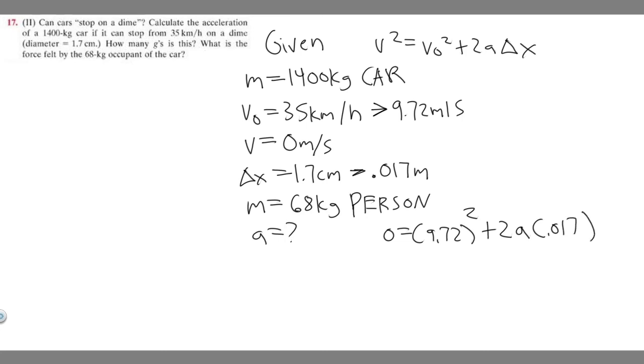If we go ahead and solve for this, I'm going to move this to the other side, so minus 9.72 squared is equal to 2 times 0.017, which just becomes 0.034 times a.